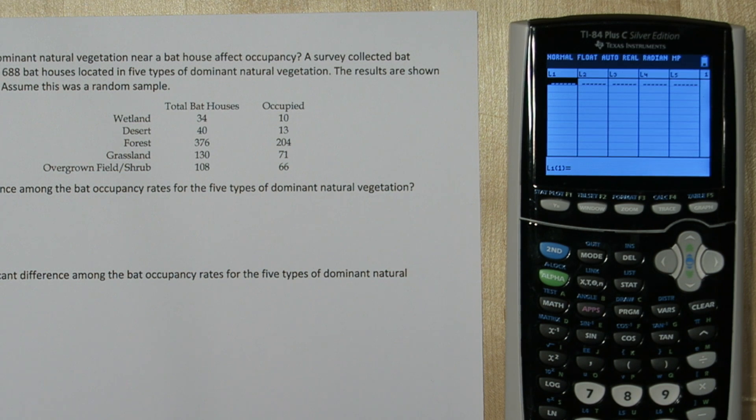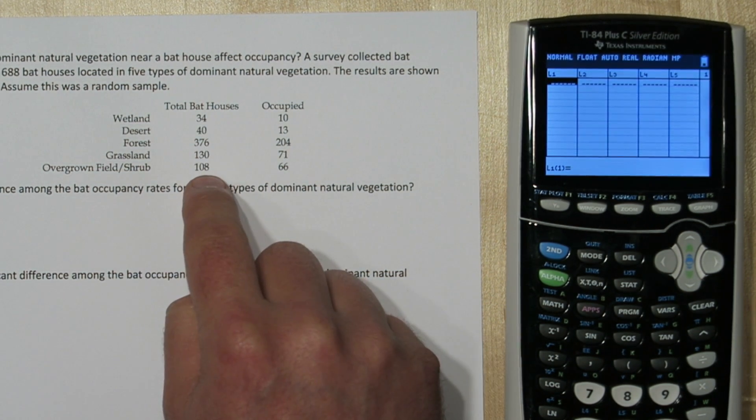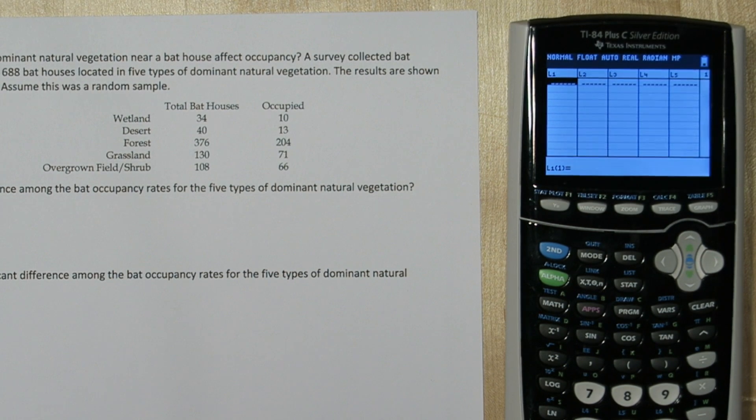In list one, we're going to input the total bat houses for each of the different types of dominant natural vegetation. Now we're going to press OVER and put in the number of occupied bat houses for each of these types.